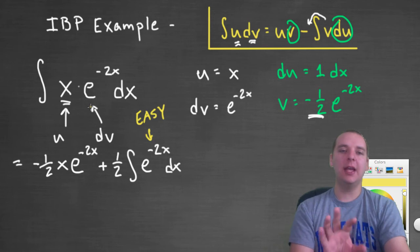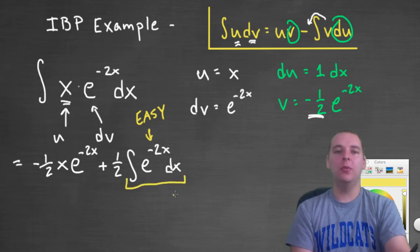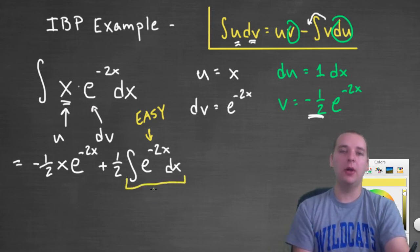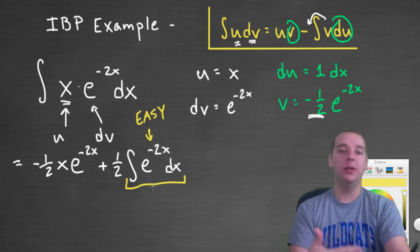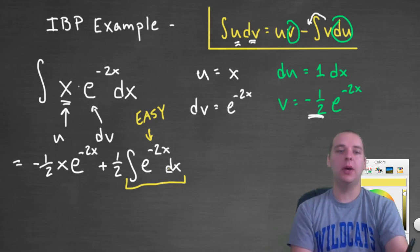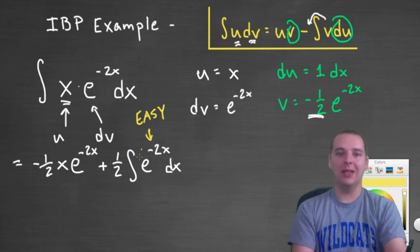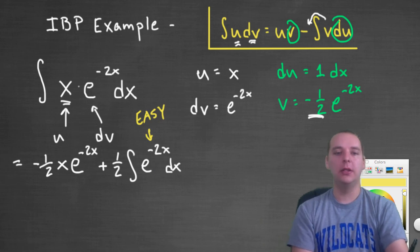Fair warning: occasionally this remaining integral might require another integration by parts. That's possible — I've seen it in plenty of examples, so just be aware. But this is a simpler example, so I can integrate this directly and we'll be done.